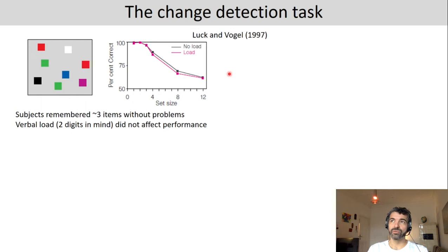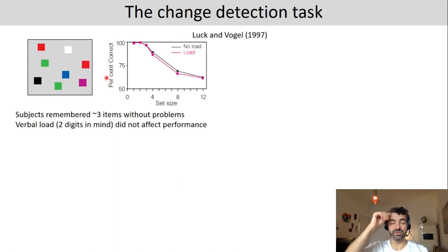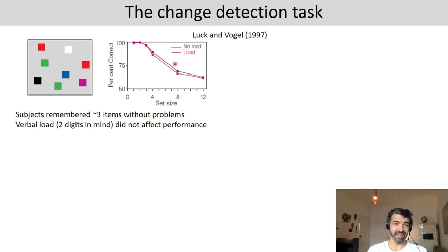Participants also did this task with a verbal load — they had to keep two digits in mind, basically using the auditory phonological loop. This was done to make sure that participants are actually using their visual working memory, rather than just verbalizing the colors. The verbal load didn't affect the results. The pink line is with load and the black line is without load, and you can see the same pattern in both conditions.